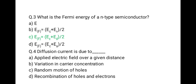Question 4: Diffusion current is due to — first, applied electric field over a given distance; second, variation in carrier concentration; third, random motion of holes; fourth, recombination of holes and electrons. Diffusion current is due to variation in carrier concentration. The correct answer is B.